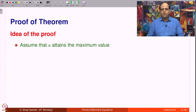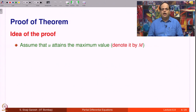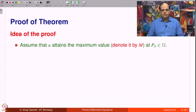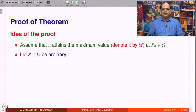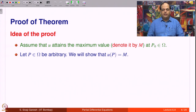What is the idea of the proof? Assume that u attains the maximum value, denoted by M. There is a hidden assumption that the supremum is meaningful and is attained at some point in omega — when the supremum is attained, it is called the maximum. Let us denote it by M at some point p₀ in omega. Let p be any other point in omega. We will show that u(p) = M, which means u is a constant function.